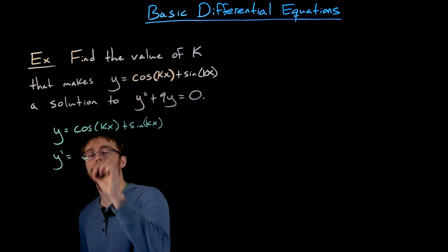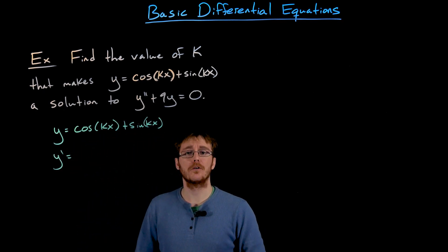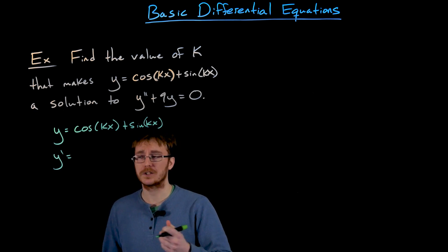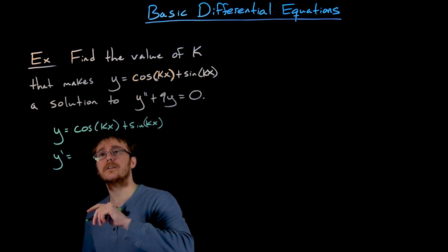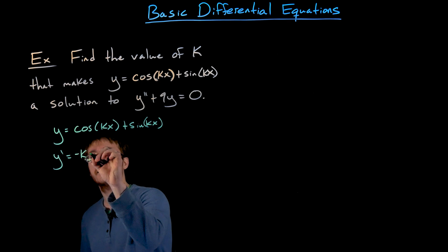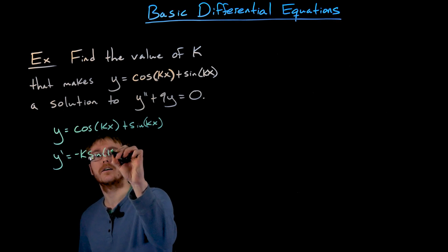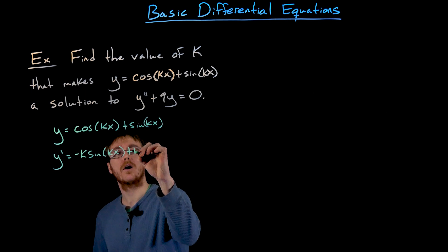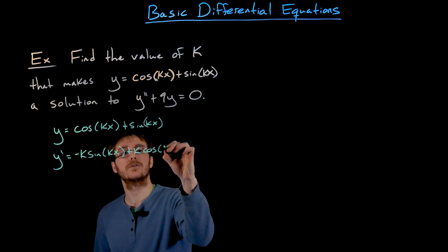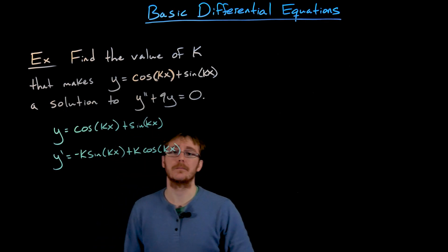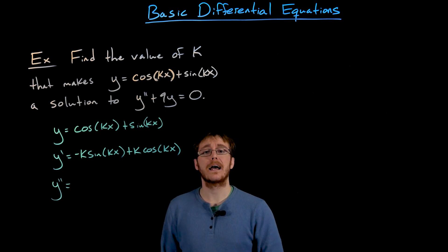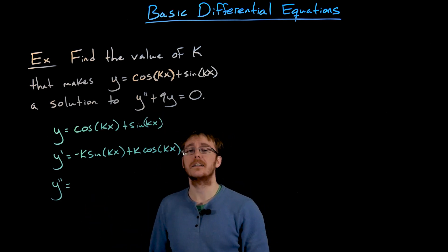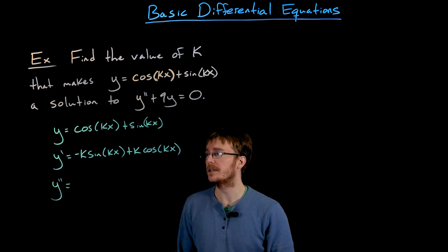We don't really need the first derivative since it's not involved in our differential equation, but we do need it to help us find the second derivative which is involved. The first derivative is going to look like negative k times sine of kx, just using our chain rule, and positive k times cosine of kx. Now that we have the first derivative, we can use that to help us find the second derivative which we need to evaluate our differential equation.